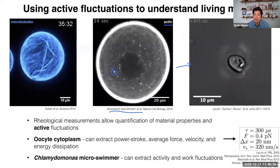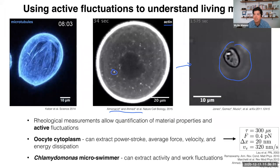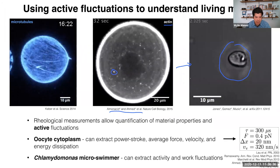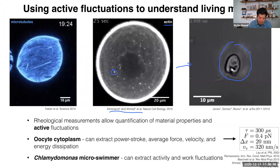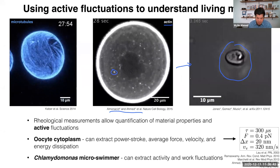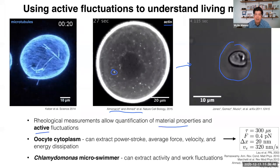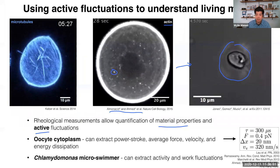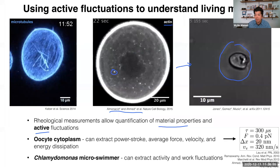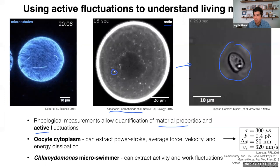We use rheological techniques — what's called passive and active microrheology — to quantify the material properties and the active fluctuations. Most of the time, our goal is not to quantify the material properties themselves; we characterize them so that we can know what fluctuations to expect at equilibrium, and then we subtract those off and see what's left over — all the active fluctuations. Applying this to these two systems, in the oocyte cytoplasm we can extract kinetics which look like they're related to molecular motor kinetics.